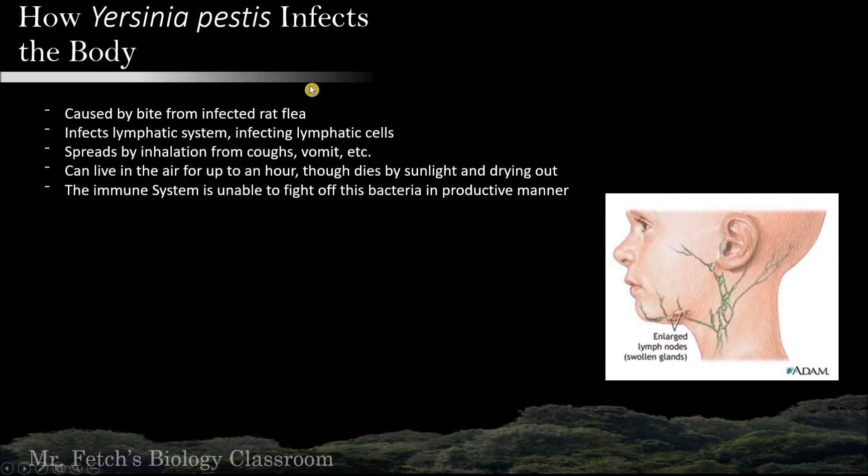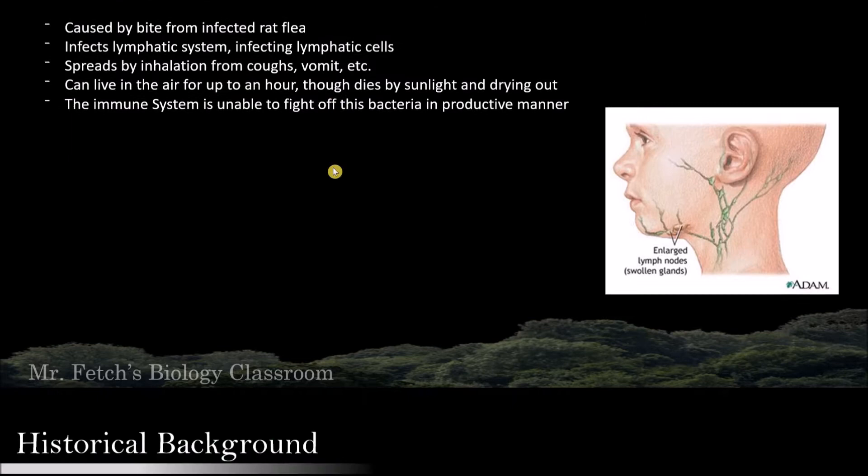The bubonic plague is caused by a bite from an infected rat flea. It infects the lymphatic system, therefore infecting lymphatic cells. It spreads by inhalation from coughs, vomit, etc. It can live in the air for up to an hour, though it dies by sunlight and drying out. The immune system is unable to fight off this bacteria in a productive manner.